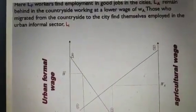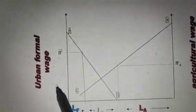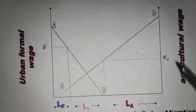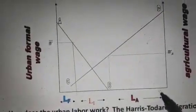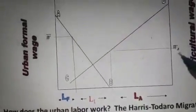You can explain this with the graph. Make a box-type graph with two y-axes and one x-axis. On one y-axis there is urban formal wage; on the other y-axis there is agricultural wage; and on the x-axis there is the movement of labour. The urban wage line is W-bar, which is expected by the rural worker, and the rural wage rate is WA. Naturally W-bar is greater than WA. Through this attraction, movement from agriculture to the urban sector takes place due to wage differences. ELF workers find employment in good jobs in cities, and LA workers remain behind in the countryside working at the lower wage WA. Those who migrate from the countryside to the city find themselves employed in the urban informal sector ELF1.